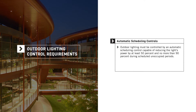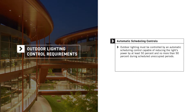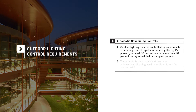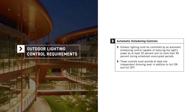All outdoor lighting must be controlled by an automatic scheduling control capable of reducing the light's power by at least 50 and no more than 90 percent during scheduled unoccupied periods. These automatic scheduling controls must provide at least one independent dimming level, in addition to full-on and full-off.